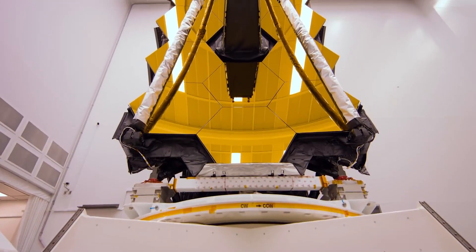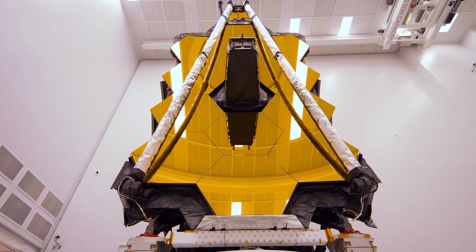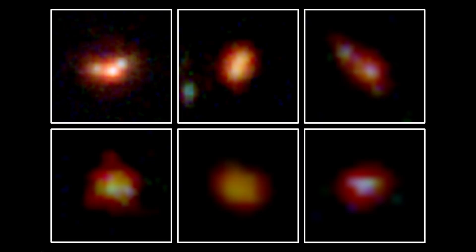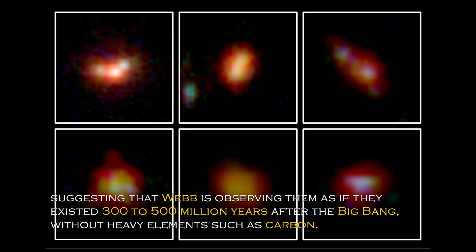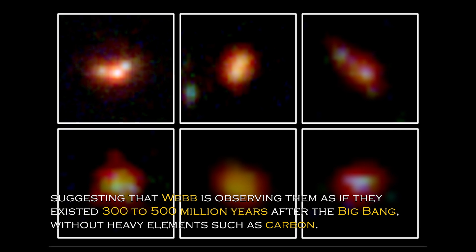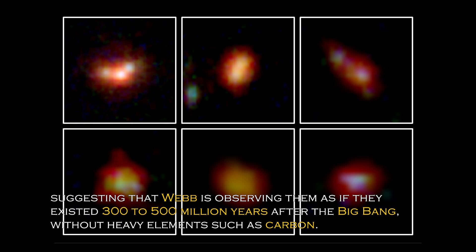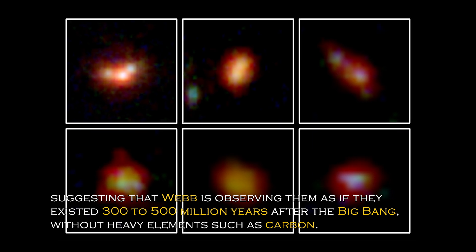Data obtained from Webb's NIRSpec spectrometer and near-infrared camera have revealed that four of the six primordial galaxies have extreme redshifts, suggesting that Webb is observing them as they existed 300 to 500 million years after the Big Bang, without heavy elements such as carbon.